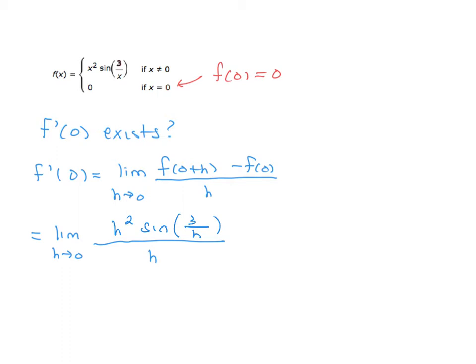To solve this limit, we can cancel the h from the denominator, and the limit we're trying to solve is the limit as h goes to 0 of h times sine of 3 over h. If this limit exists, that means the derivative at 0 also exists. So can we prove that this limit exists? I think so, and I'll do that on the next slide.